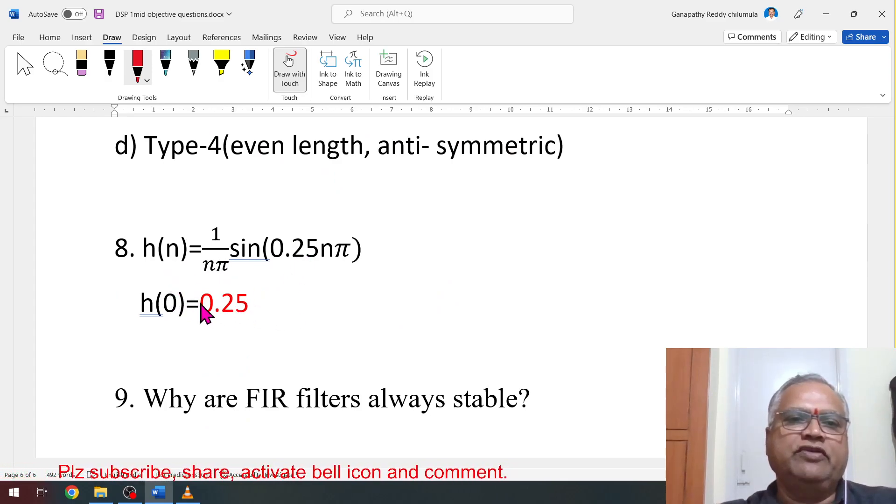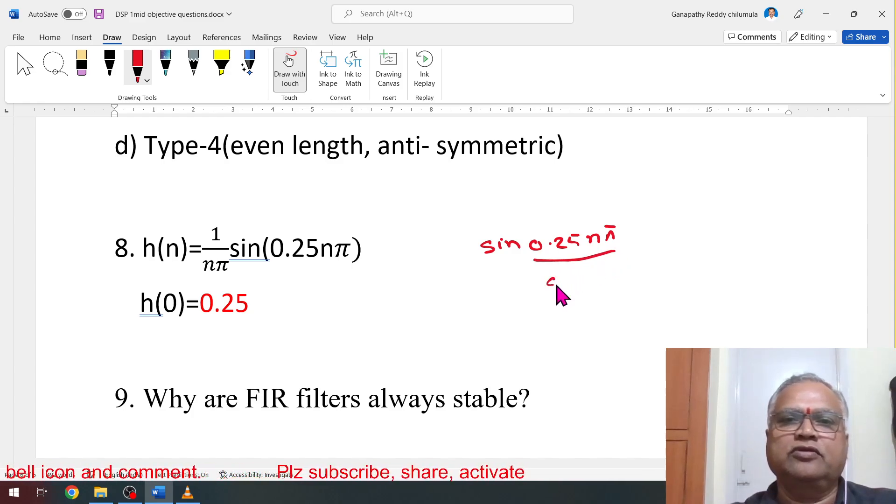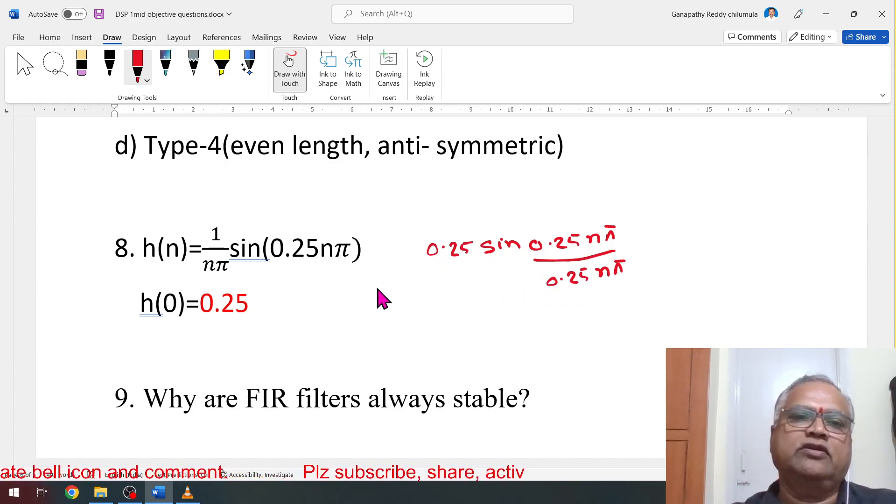h(n) is given. What is h(0)? Do not replace n with 0. This is like sin(0.25nπ), again divide with 0.25nπ. We are taking extra 0.25, write 0.25. sin(x)/x, x tends to 0 is 1. Therefore, 0.25 is the answer.